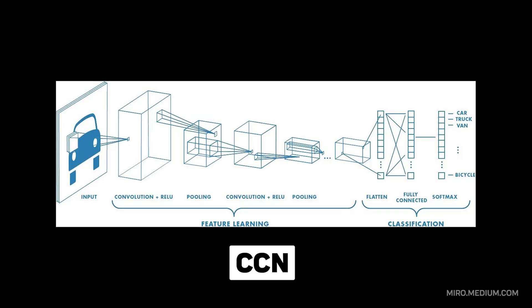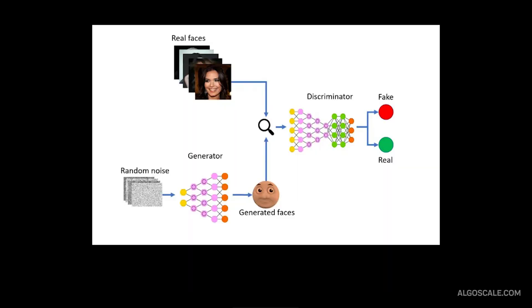CNNs excel at processing images by scanning for patterns. Transformers handle language by connecting related words, and GANs can generate new content by learning from existing data.